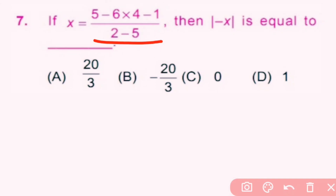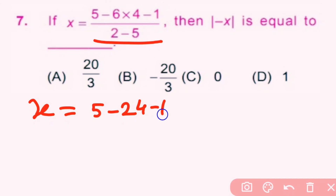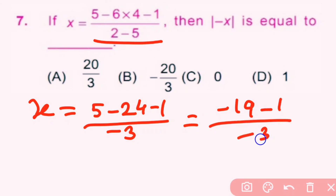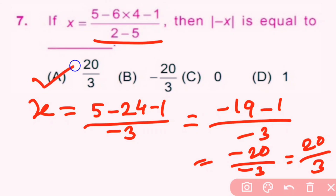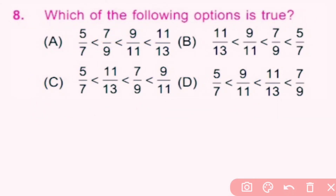Question 7: If x equals the given expression, find the absolute value of −x. Using DMAS rule, we first do multiplication: 5 − 6×4 = 5 − 24 = −19, and 2 − 5 = −3. So x = (−19 − 1)/(−3) = −20/−3 = 20/3. So option A is correct.